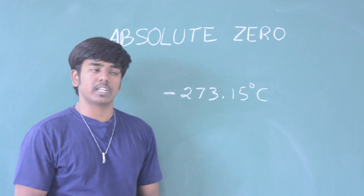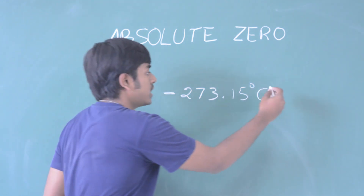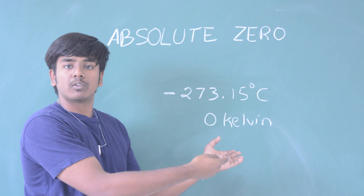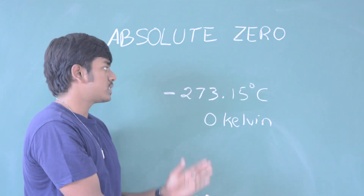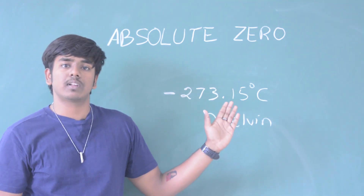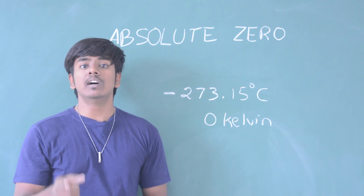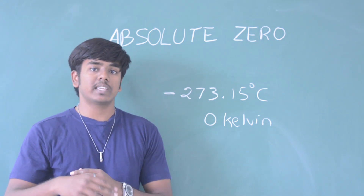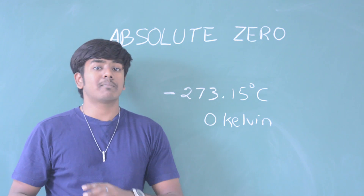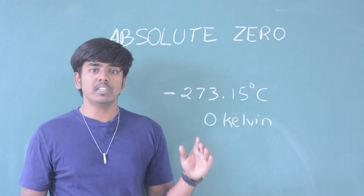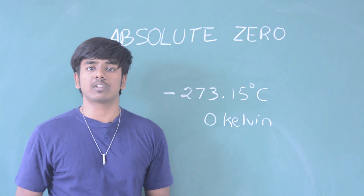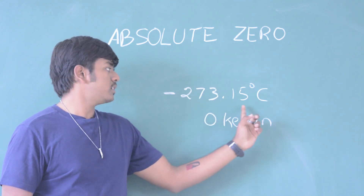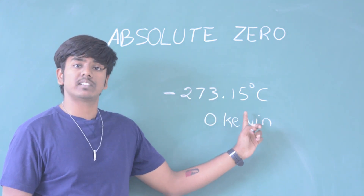The Kelvin scale sets this temperature as zero Kelvin. We can predict that temperature is minus 273.15 degrees Celsius. At that point, we can say the temperature is Absolute Zero — it is zero Kelvin. So, Absolute Zero is minus 273.15 degrees Celsius, which equals zero Kelvin.